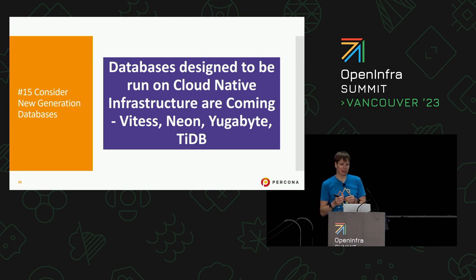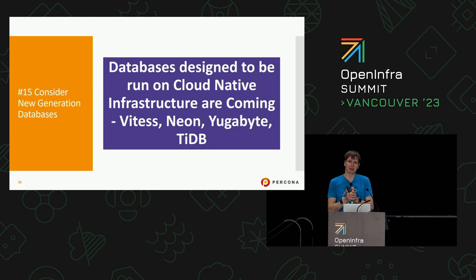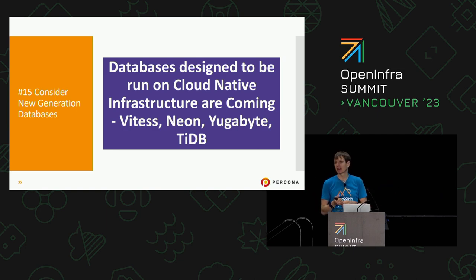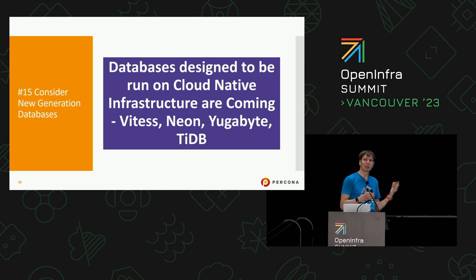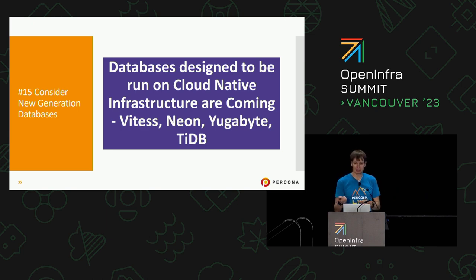The last one I'd mention is considering new-generation databases. There are databases designed to run on cloud-native infrastructure, running exactly on Kubernetes. They're typically designed with sharding, scaling across many nodes, and horizontal scalability in mind — especially great for large-scale environments. There are a bunch of open source solutions in this space that are not as popular yet as Postgres or MySQL, but they are growing rapidly.